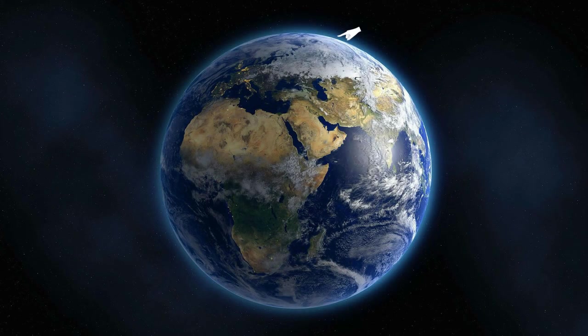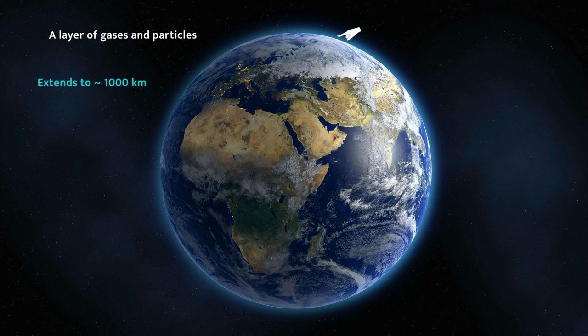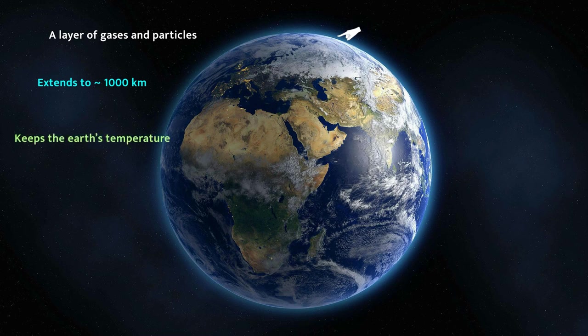The atmosphere might be imagined as a blanket wrapped around the earth body. It is a layer of gases and particles that extends from the earth's surface to altitudes of about a thousand kilometers. The atmosphere keeps the earth temperature suitable for living and prevents harmful rays and radiations from reaching the earth.